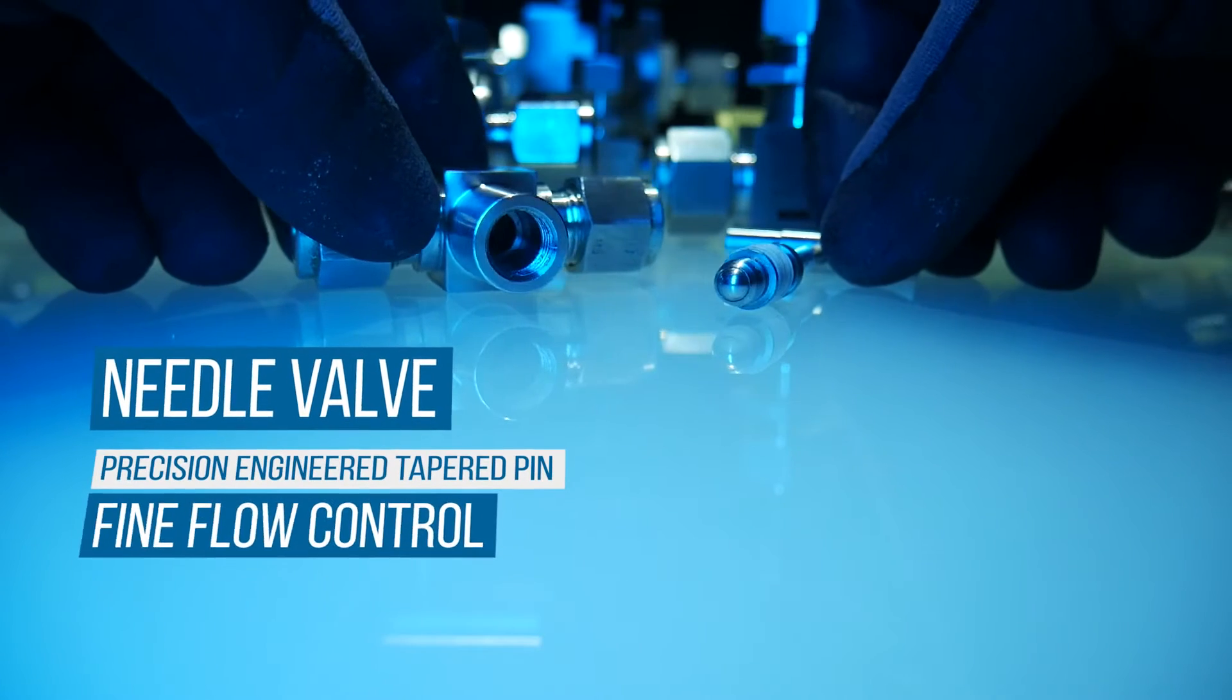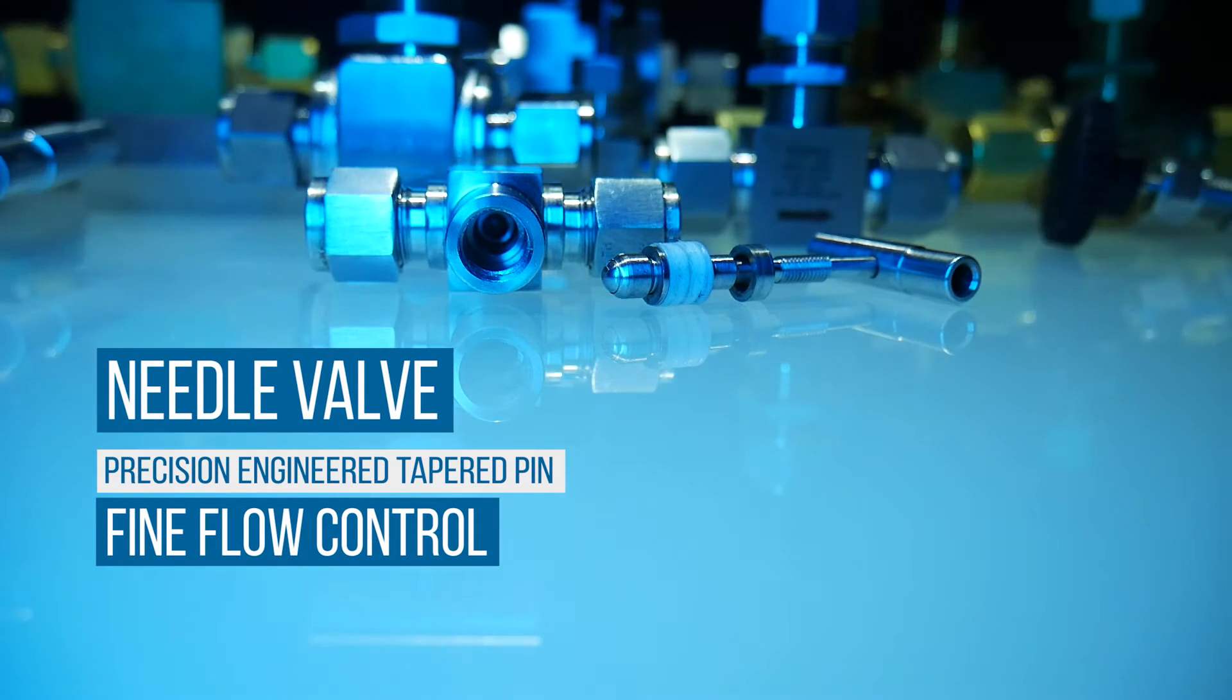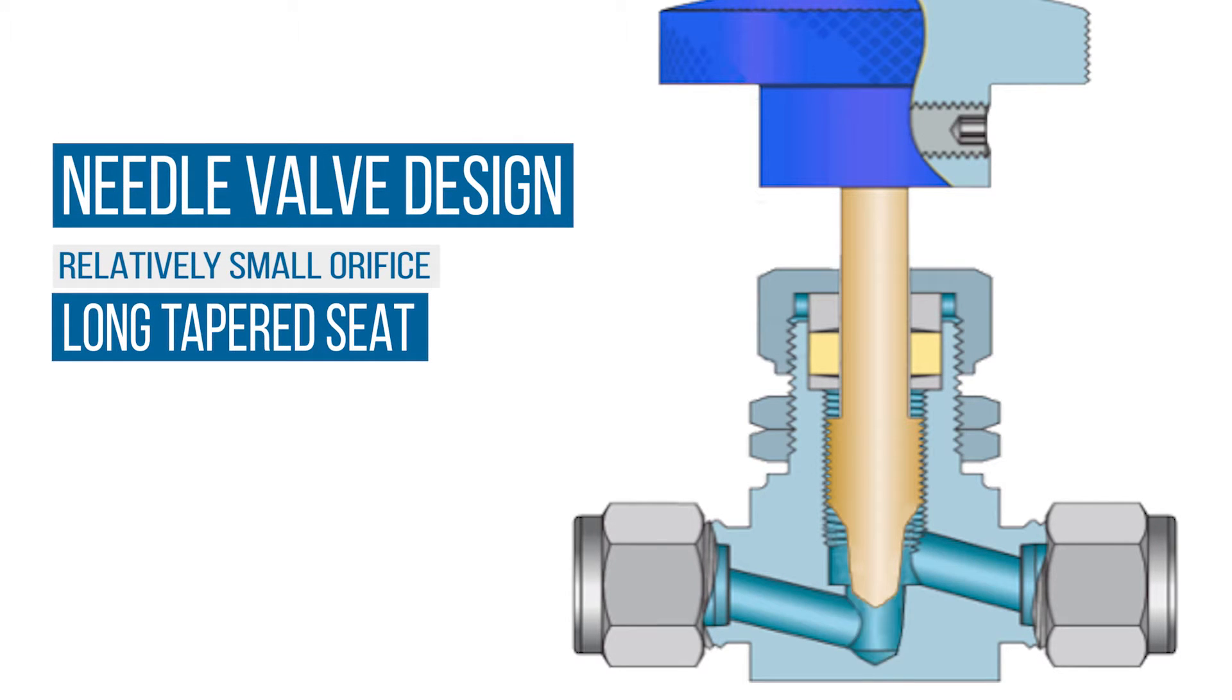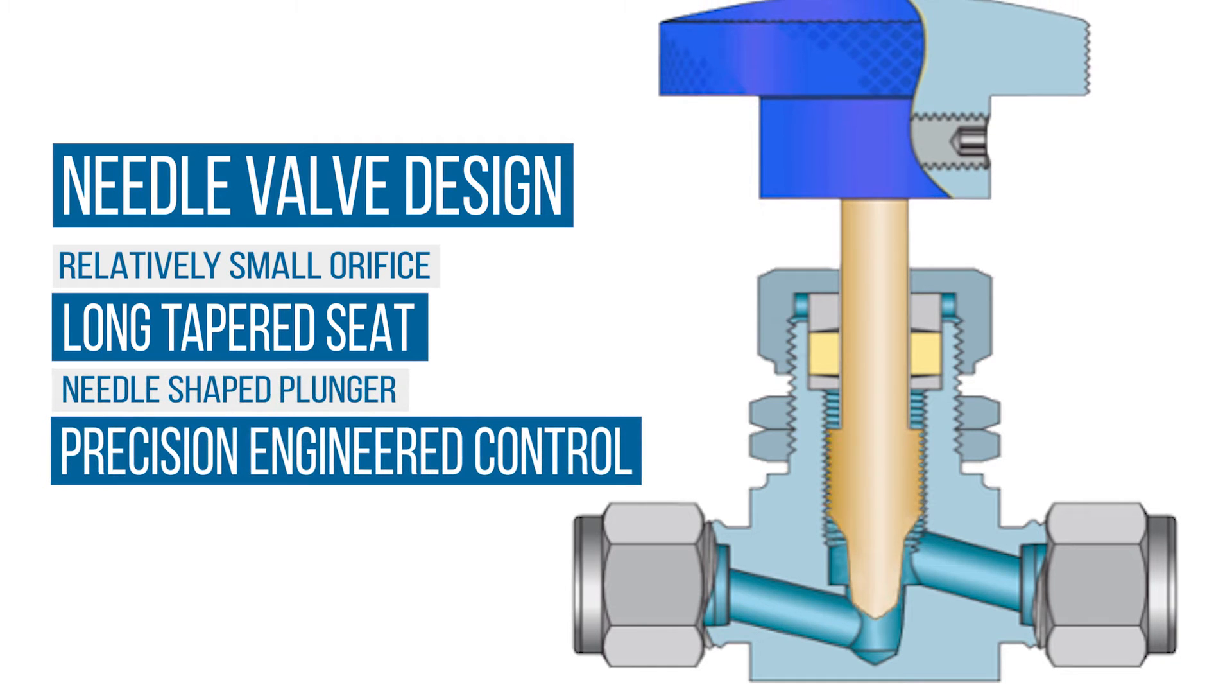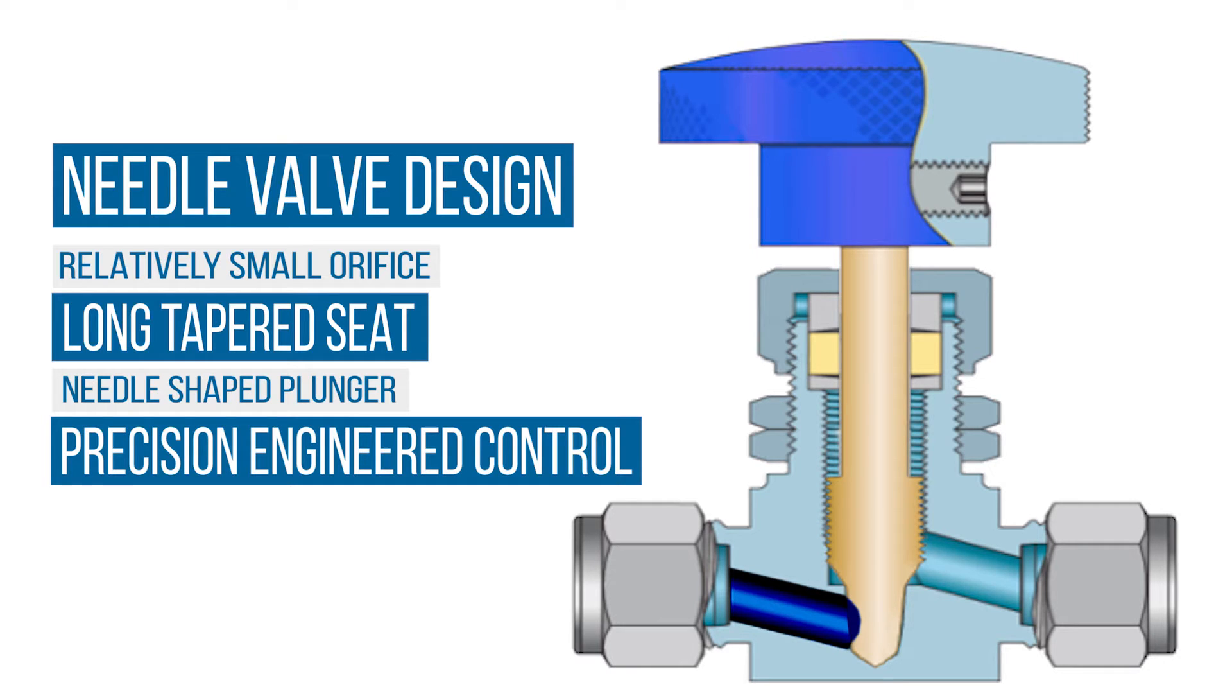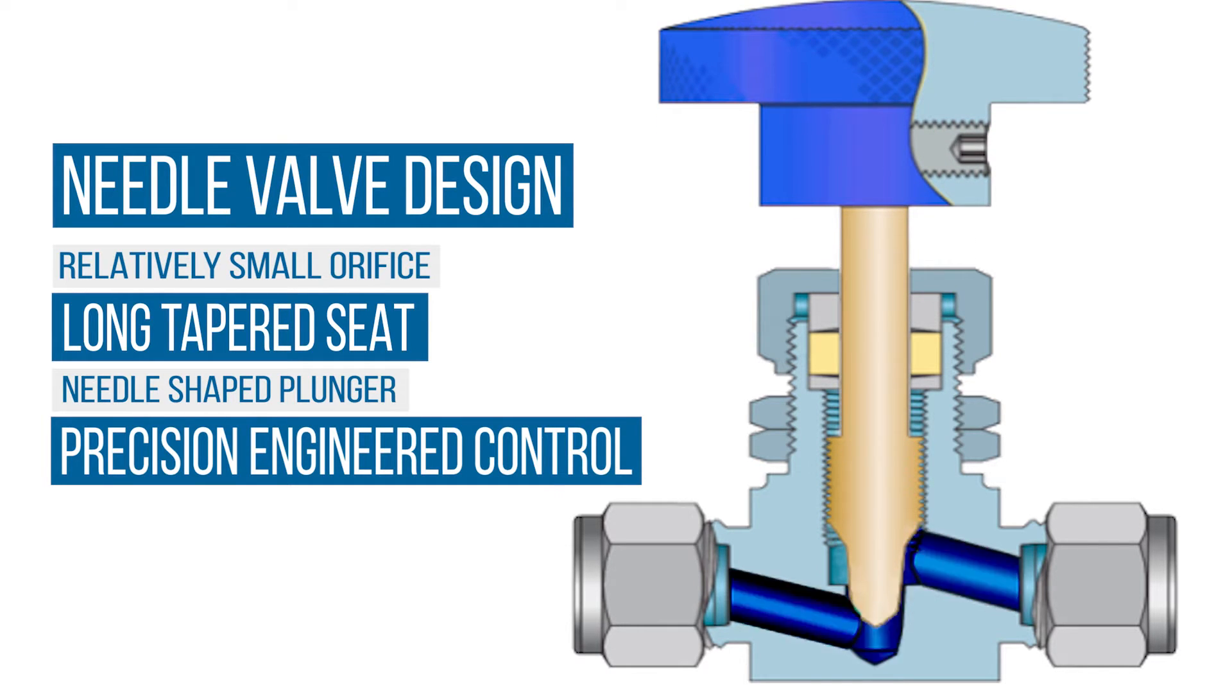A needle valve uses a precision-engineered tapered pin to gradually open the space for fine control of flow. A needle valve has a relatively small orifice with a long tapered seat and a needle-shaped plunger on the end of a screw, which precisely fits the seat for the valve shutoff. When the needle valve screw is turned, the plunger retracts allowing flow between the seat and the plunger.